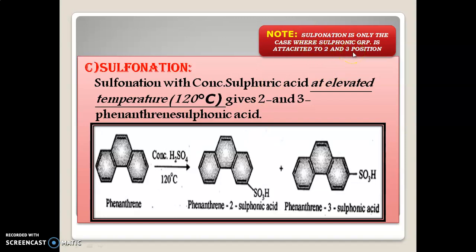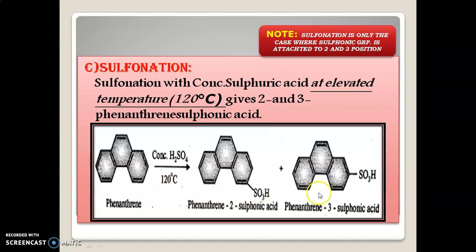An important point to note is the temperature parameter: sulfonation uses an elevated temperature of 120°C. If you do not write 120°C in the reaction, the reaction won't give the correct product. The temperature is very important to be written. Other than this temperature, the expected product will not form. So, temperature is very important — note this point.